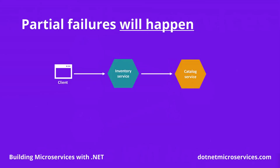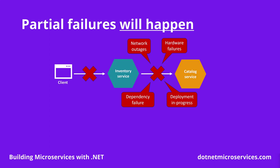Even after placing our best efforts to ensure we have a healthy system, it is a matter of fact that in distributed systems, partial failures will happen. This could be due to multiple reasons, including network outages, hardware failures, dependency failures, and even routine things like having a deployment in progress. Regardless of the cause, when calling a dependent service, it could cause our microservice to fail, which will end up in a bad experience for our clients.